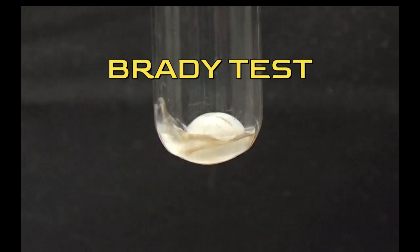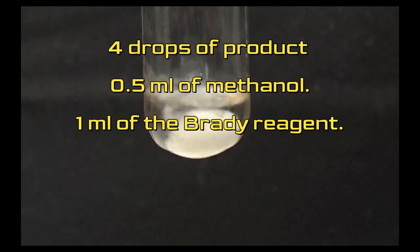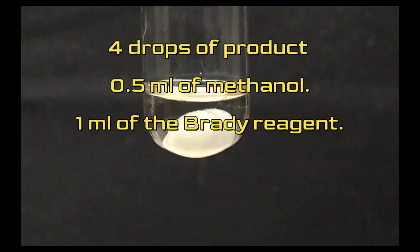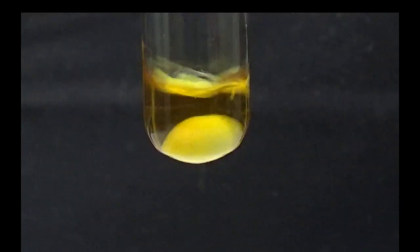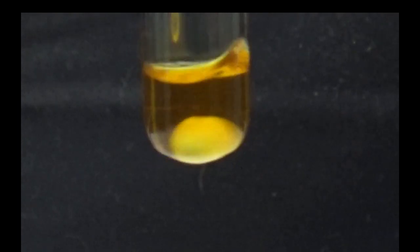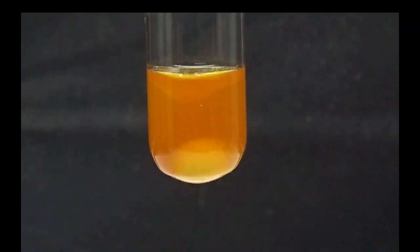For the Brady test, we will put 4 drops of product into a test tube and 0.5 milliliters of methanol. While agitating vigorously, add 1 milliliter of the Brady reagent. Let stir for about 10 minutes until the appearance of a precipitate orange hydrazone. Brady's reagent reacts with ketones and aldehydes to form insoluble hydrazones.